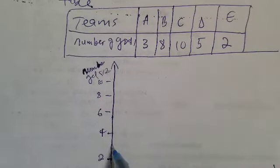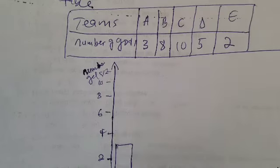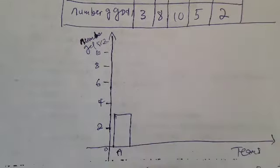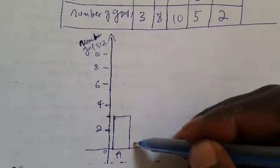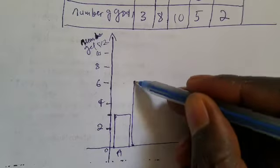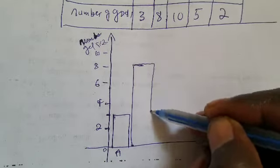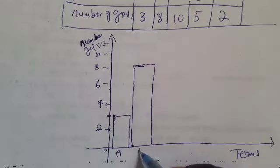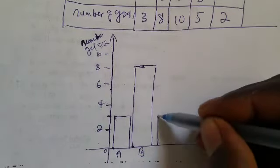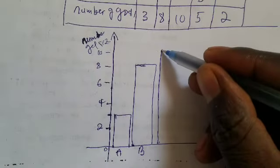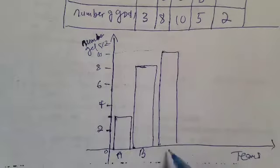We draw a bar for Team A up to the value of three. Then for Team B, which scored eight goals, we extend the bar up to where eight is on the scale. For Team C, which scored ten goals, we extend the bar up to where ten is.